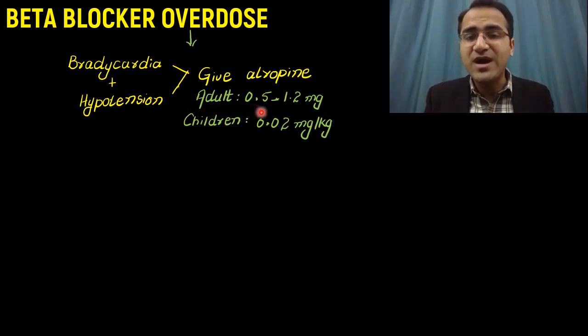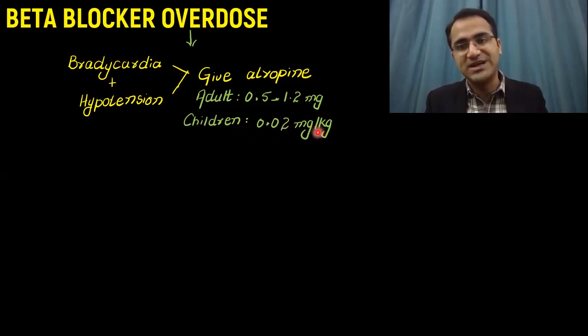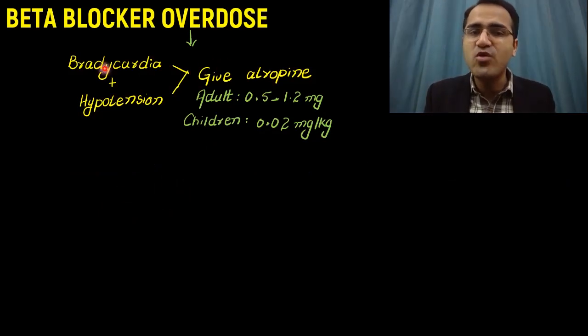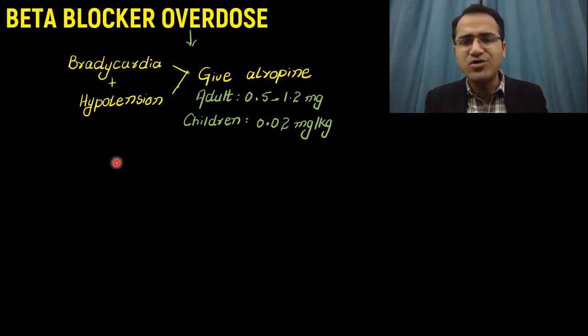In adults, you give 0.5 to 1.2 milligrams of atropine. In children, you give it according to the weight, 0.02 mg per kg. What else do you have to give other than atropine to control bradycardia and hypotension?